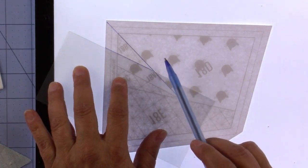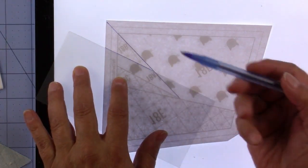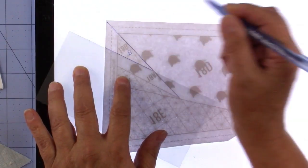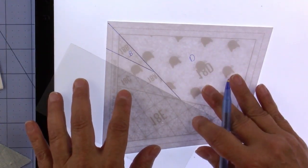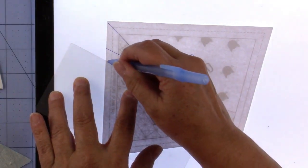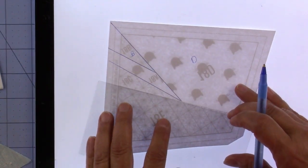I'm also going to transfer the fabric letters. This is B and this is D. Just continue tracing the lines and go all the way to the outside.